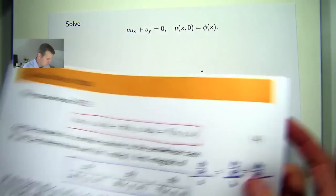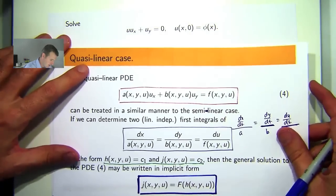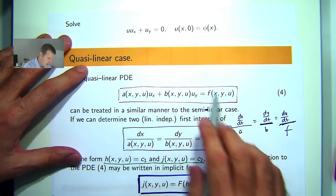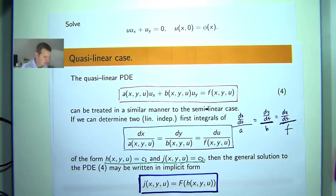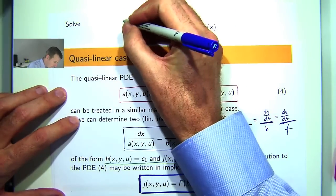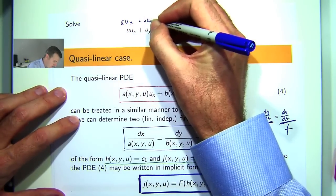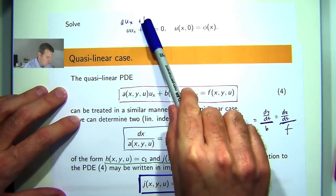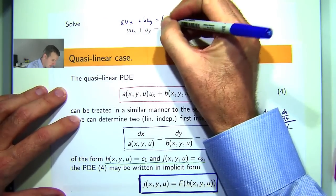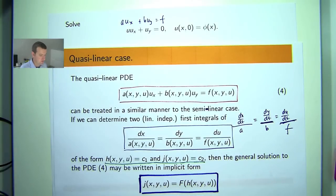So you can see in this context, if we just compare this with this, the right hand side is identically equal to 0 so it's a homogeneous problem. Your a would be u, your b would be positive 1, and your f would be just the 0 function.